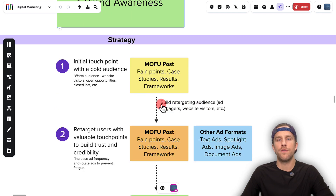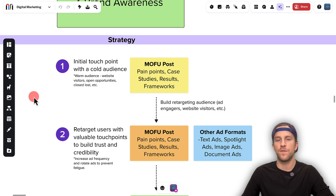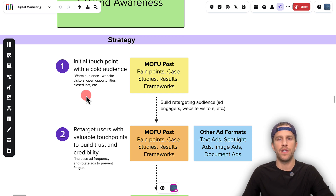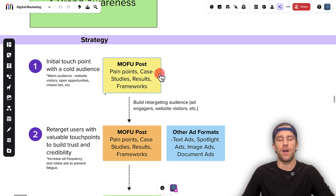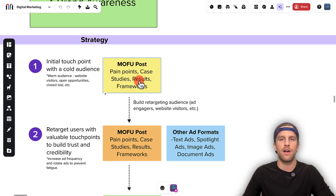Now I'm going to walk through a quick strategy of how you can think about this and utilize your own posts to drive results for your business. Three steps: the initial touch point — generally people are targeting a cold audience, so they don't know your brand and might not be familiar with you. If you are doing that, it's great to start with a middle-of-funnel type of post. So talking about the pain points of your prospects, including a case study of how you've helped similar clients, any type of results-oriented post showing results you got for a client, or any type of framework.